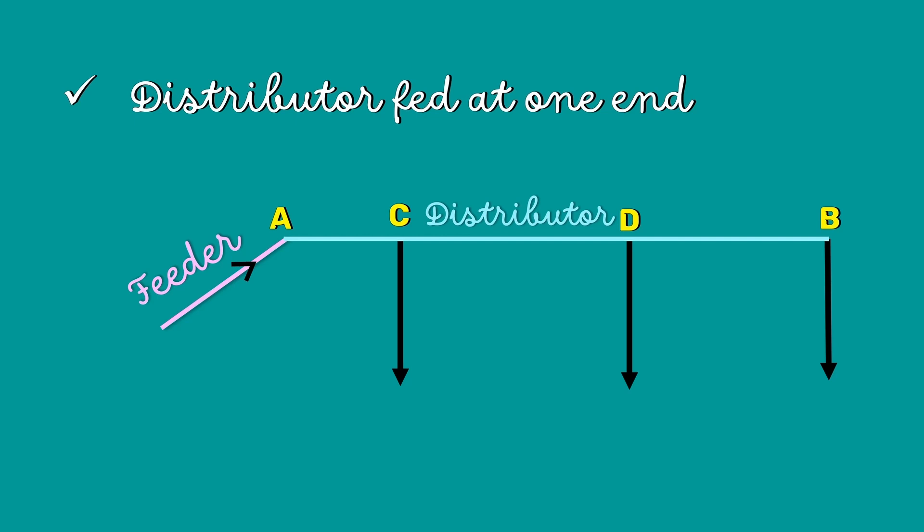If the current flowing through the load tapped from point B is I3 and that tapped from D is I2, then the current through the section CD is I2 plus I3. Similarly, if the current flowing through the load tapped from C is I1, then the current through the section AC is I1 plus I2 plus I3.